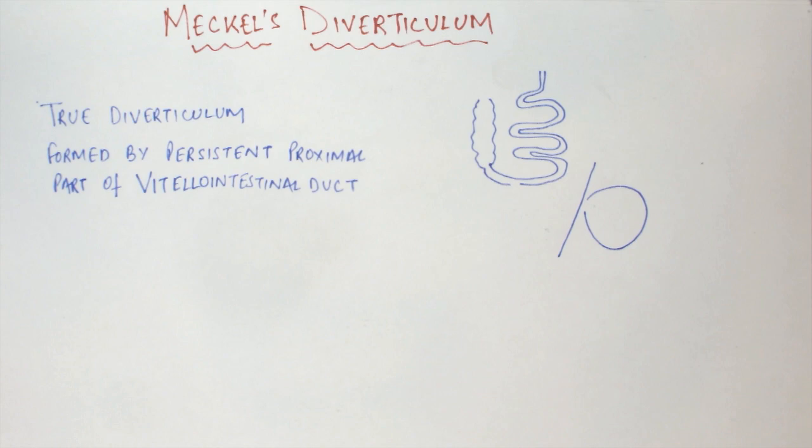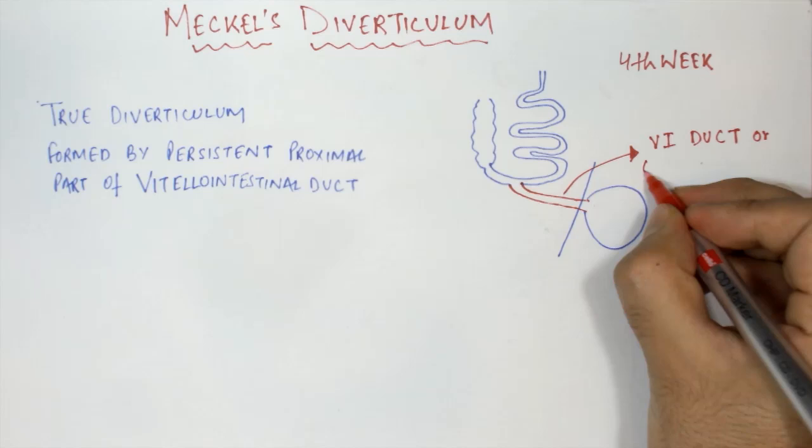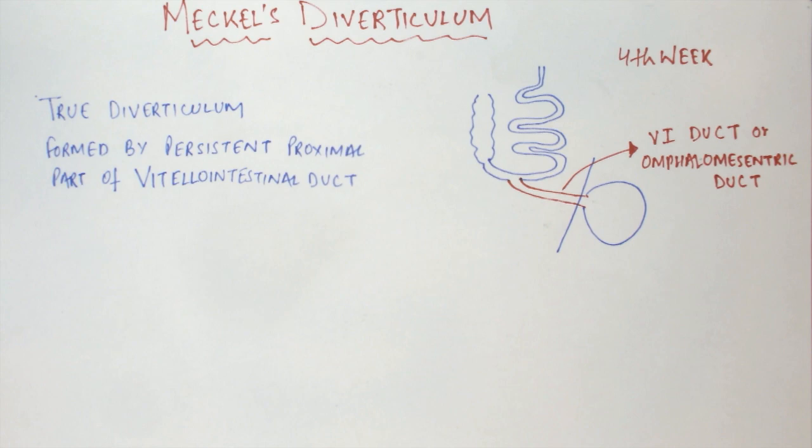During the fourth week of gestation, there is a connection between the foregut and the yolk sac, and this connection is known as the vitellointestinal duct or the VI duct. It is also known as omphalomesenteric duct, and during the natural course of gestation, during the ninth week, this duct gets obliterated.